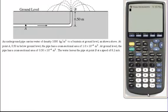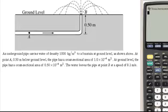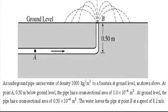Hey, this is Mr. Aden. I'm going to be detailing a Bernoulli's principle problem. This comes out of the 2009 AP exam. This is where we have an underground pipe that's carrying water with a density of a thousand kilograms per meter cubed to a fountain at ground level.